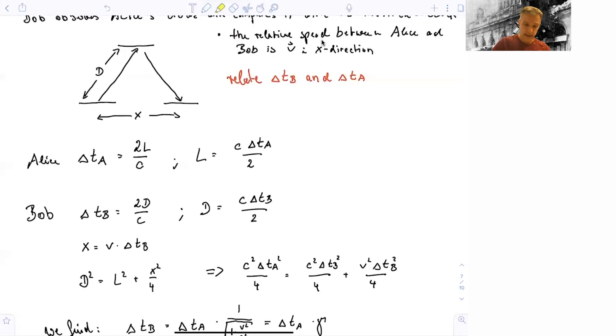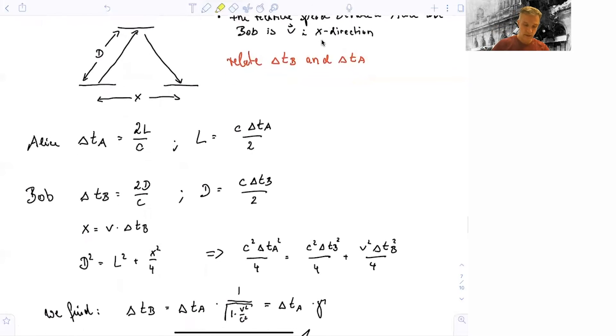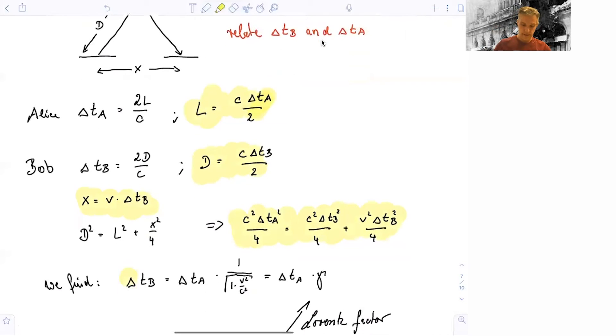The length in x is simply given by the relative velocity V times the time it takes for the clock to tick, V times delta T B. So then we can express D square via L square plus x square over 4 and use those expressions here. So we just use this for L, this for D, and this for X, and we find this expression here. And then we solve this for delta T B.